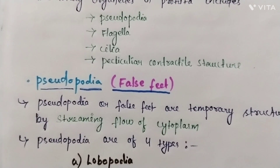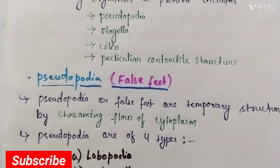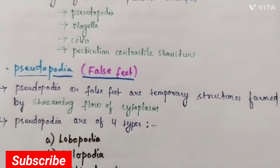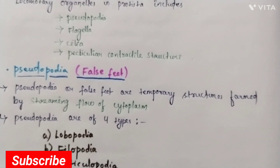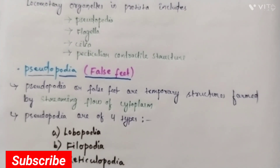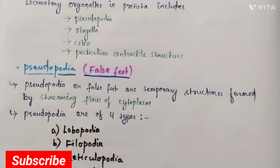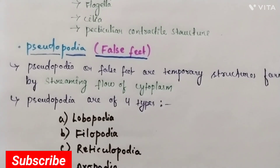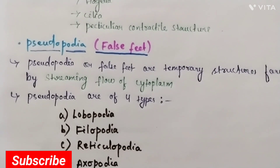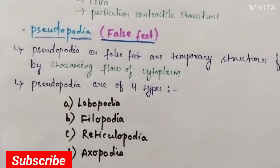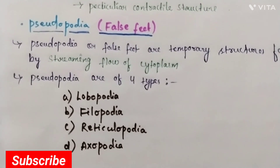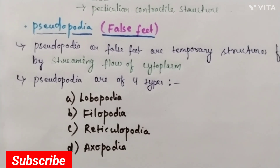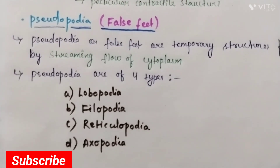Pseudopodia, also known as false feet, are temporary structures formed by the streaming flow of cytoplasm. Pseudopodia are of four types: lobopodia, philopodia, reticulopodia, and axopodia.